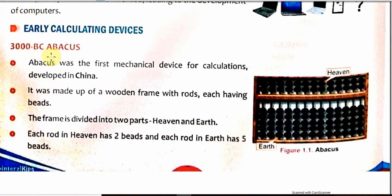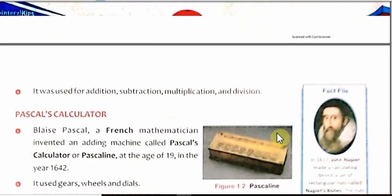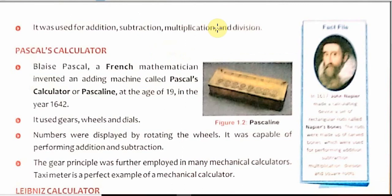Early calculating devices — the first one was the abacus. It was a mechanical device for calculation which was developed in China around 3000 BC. It was made up of a wooden frame with rods. Please see the figure — this is the abacus; students in early classes still use it. The frame was divided into two parts: heaven and earth. The upper side was heaven and the lower side was earth. Each rod in heaven has two beads and each rod in earth has five beads. It was used for addition, subtraction, multiplication and division.